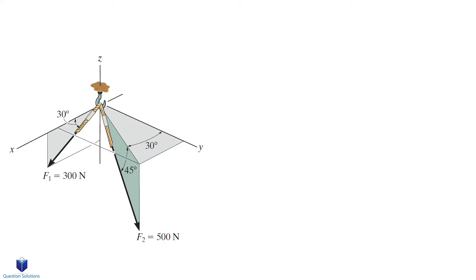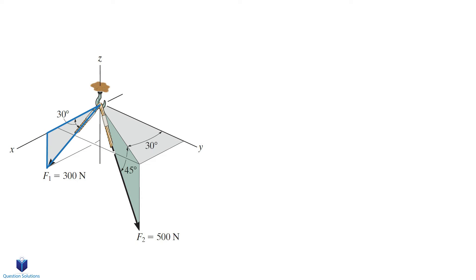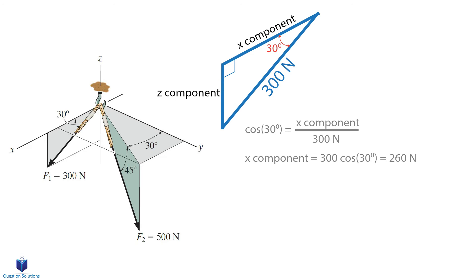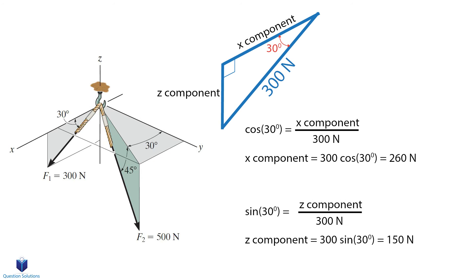Let's look at the next example. In this diagram, note that the angles we see are not coordinate direction angles. We will first look at force F1. We can see that it lies in the x-z plane. Because of that, force F1 does not have a y component — it only has an x component and a z component. We can use trigonometry to figure out the x and z components. Because this is a right angle triangle, we can use our basic trig functions. We can write cosine 30 degrees is equal to the x component over 300 newtons, because cosine is adjacent over hypotenuse. Isolating for the x component and solving gives us 260 newtons.